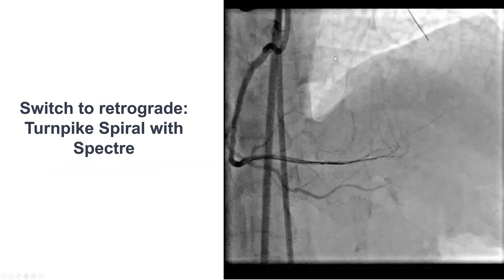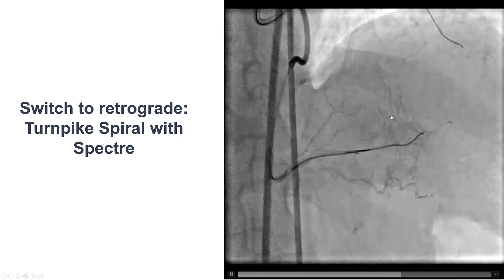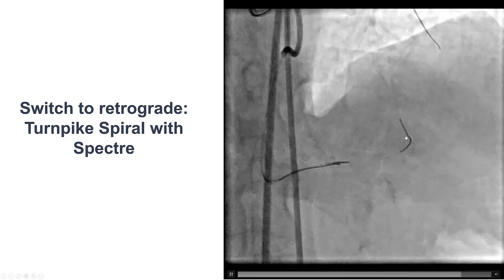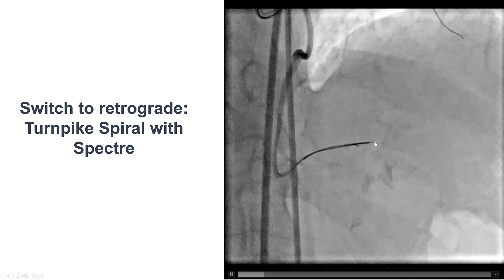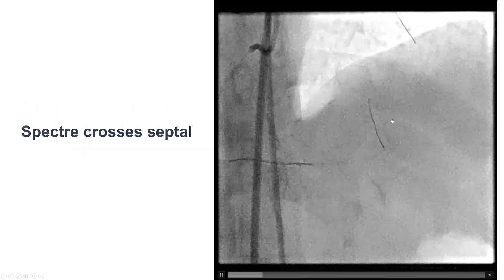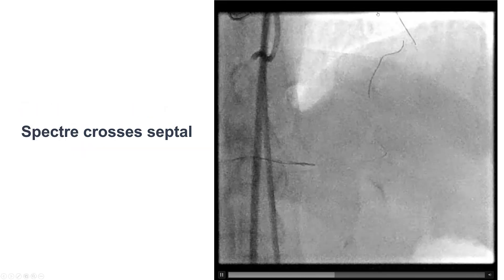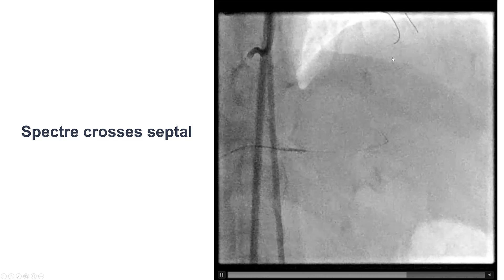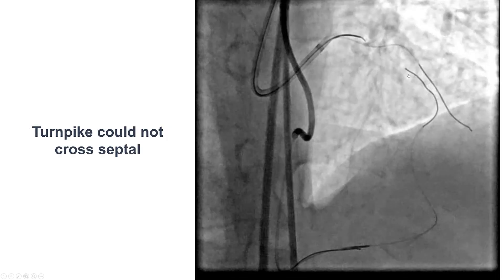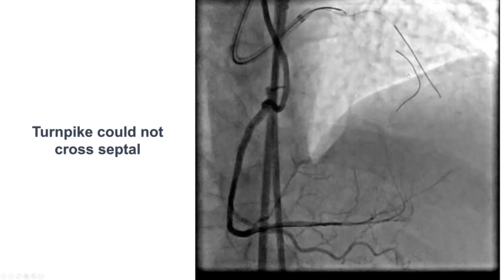As a result, we decided to switch to retrograde crossing. A Spectra workhorse guide wire went through the septal collateral and successfully crossed into the truelumen through the septal collateral — very quick crossing with a standard workhorse guide wire.